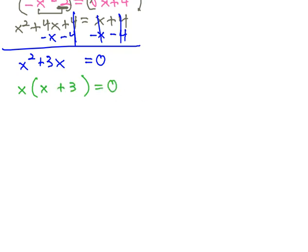And then, we can set each factor equal to 0. The first factor, the GCF equals 0 and x plus 3 equals 0, which we can quickly solve by subtracting 3 from both sides to get x equals negative 3.